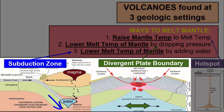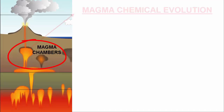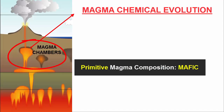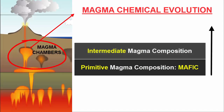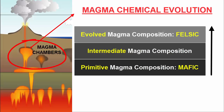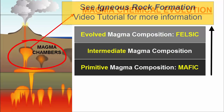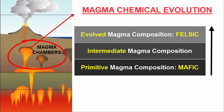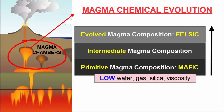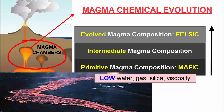In both subduction zone and divergent plate boundary volcanism, magma supply is low and episodic, so magmas can sit for a while in magma chambers. In these chambers, the magmas can chemically evolve from their original composition, which we refer to as primitive or mafic, through an intermediate composition, and then to felsic composition magmas. For purposes of this video tutorial, we need know only that the more primitive mafic magmas are characterized by low water gas content, low silica content, and low viscosity. Upon eruption, these lavas flow quickly and easily, and easily allow gases to escape.